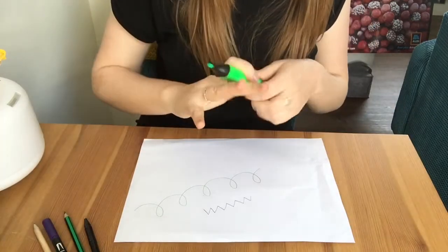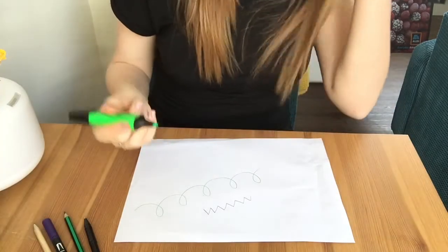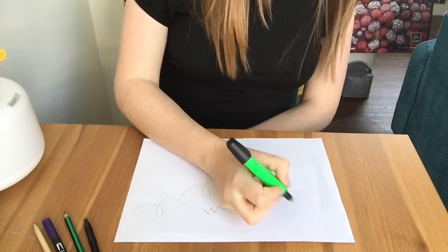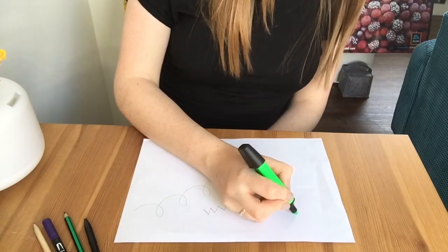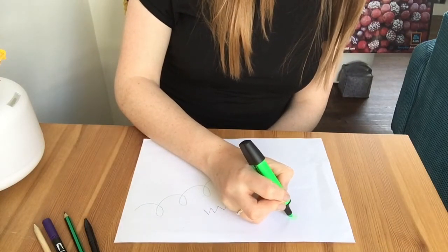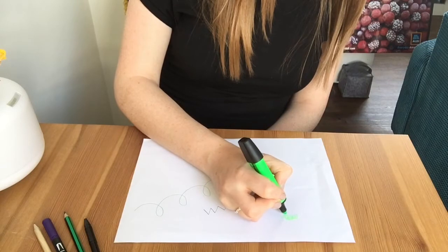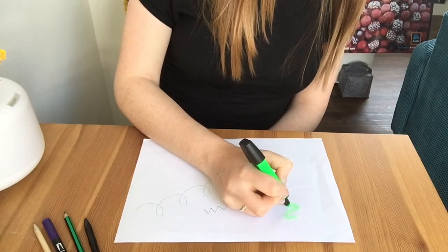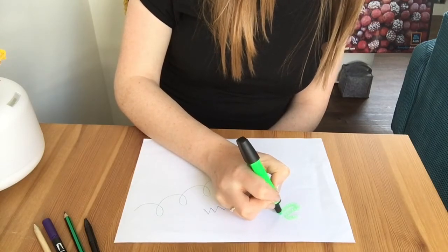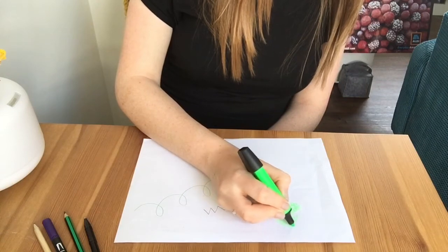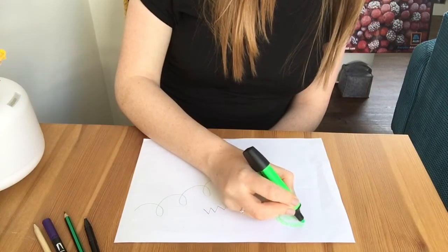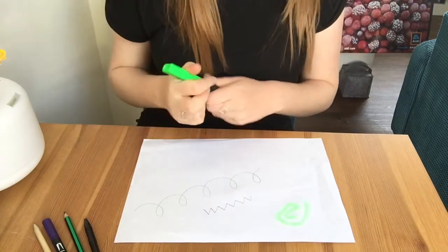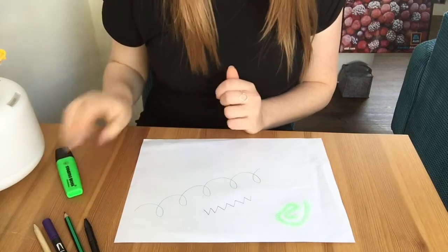I'm going to switch to my highlighter pen now. I'm going to try and do some smaller movement, so perhaps some swirls that are more close together, that just involve me moving my fingers — I'm moving my wrist a lot less. Let's see what else have I got to use?